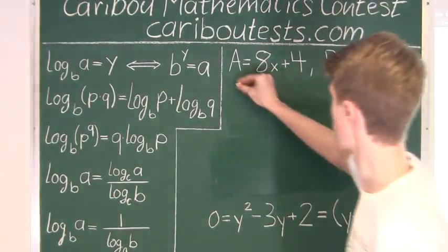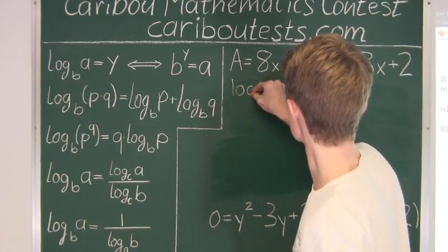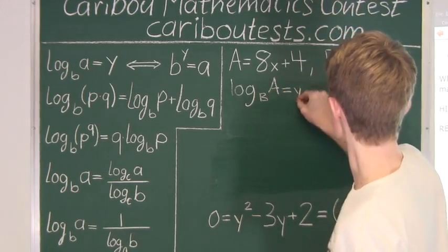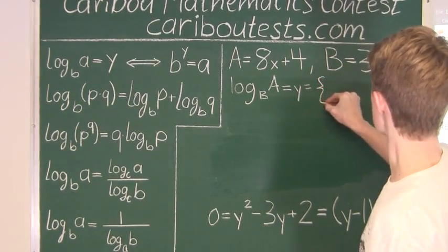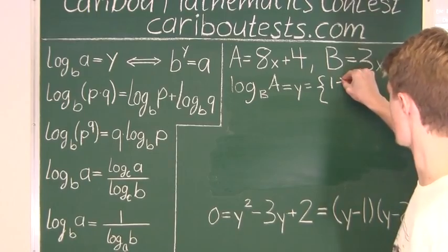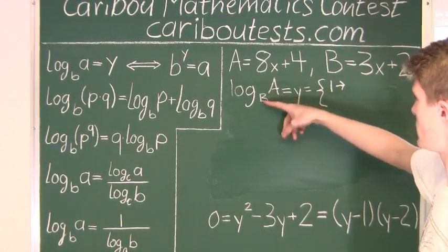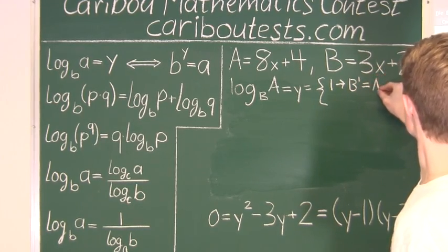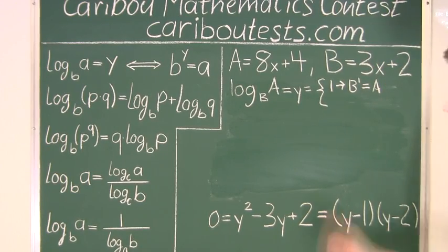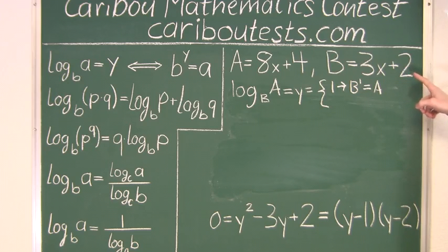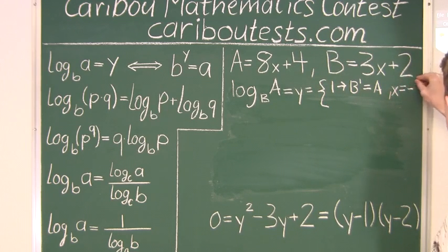We know log A base B equals Y. For Y = 1: B to the power of 1 equals A, meaning 3x + 2 = 8x + 4. Solving gives 5x = −2, so x = −2/5.